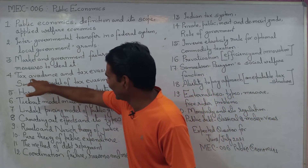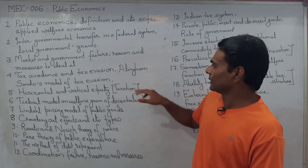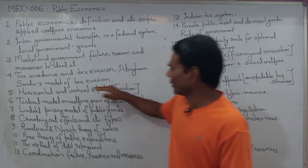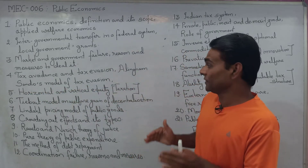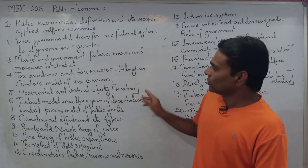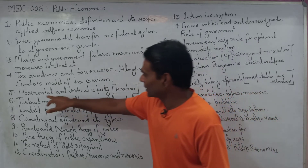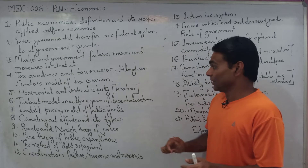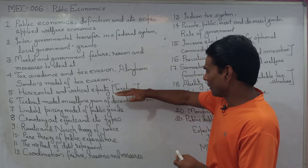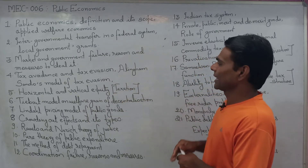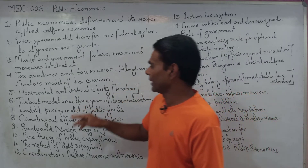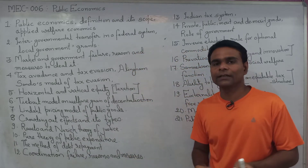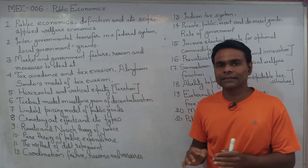Tax avoidance and tax evasion. The Allingham-Sandmo model of tax evasion. Horizontal and vertical equity in the context of tax evasion. The Tiebout model on welfare gain of decentralization.